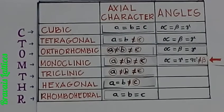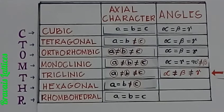The monoclinic system has alpha and gamma equal to 90 degrees. The triclinic system is very easy to remember since all its axial characters and angles are unequal.